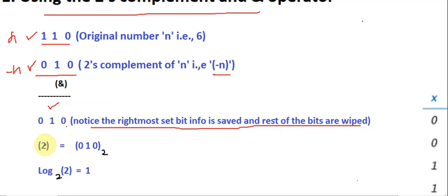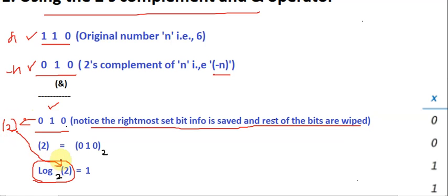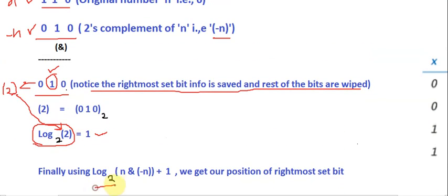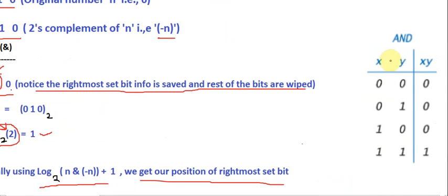This resulting value in binary, which is two in base 10, when we take log base two of it gives one, and adding one gives the rightmost set bit position two. So using log base two of (n AND minus n) plus one, we get the position of the rightmost set bit. Here is the AND truth table just for reference.